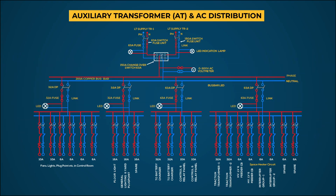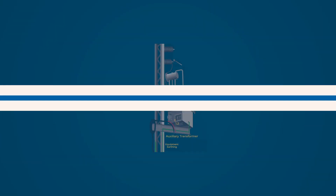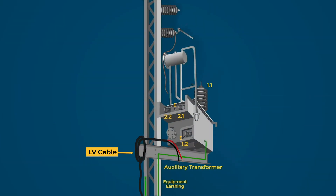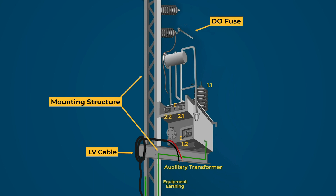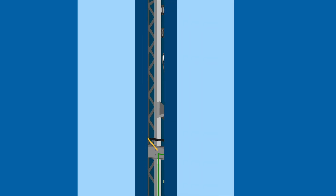This figure shows the complete scheme of AC supply through ACDB inside the control room. ATs are provided on the mounting structure with DO fuse assembly.